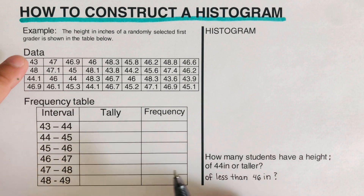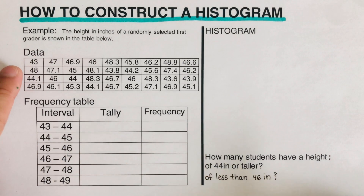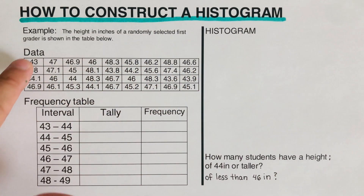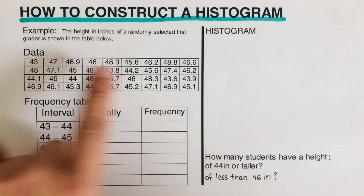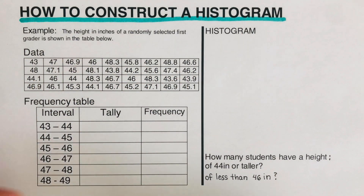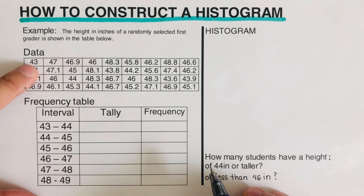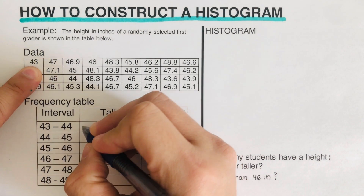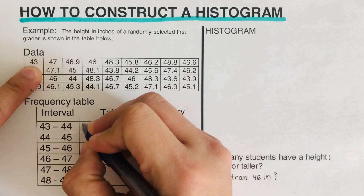We are going to tally from top to bottom. You can do it left to right or any way you prefer — it doesn't really matter. So we have 43, which is tallied in the first row because that is a solid 43.